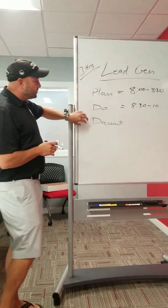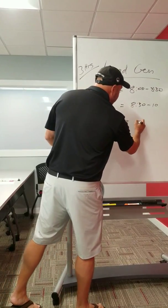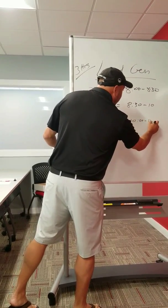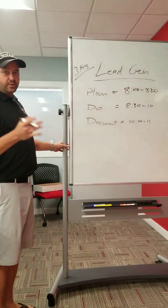And this may be 8:30 to 10. That's where you're going to actually do the activity. So you plan, do, and then document. Document might be 10 to 11. So three hours, 8 to 11.